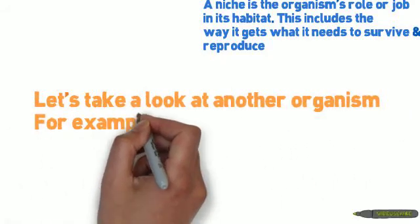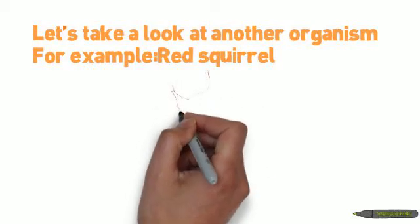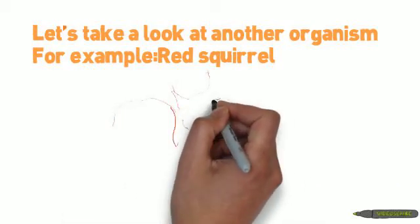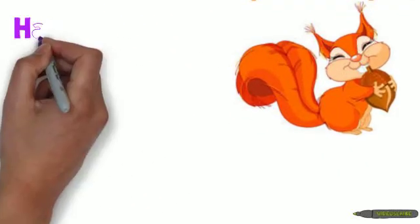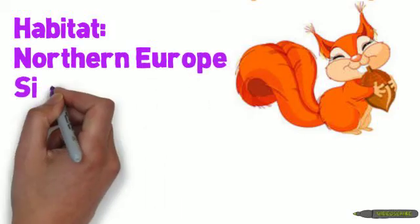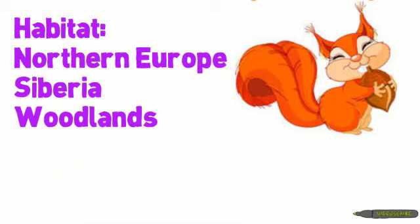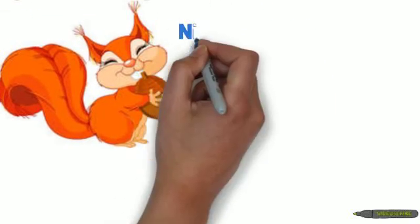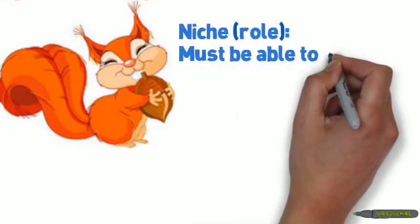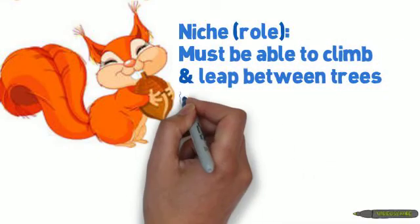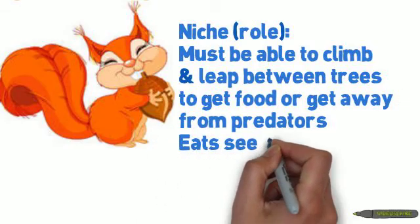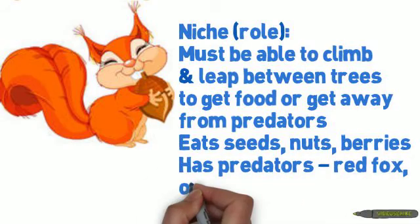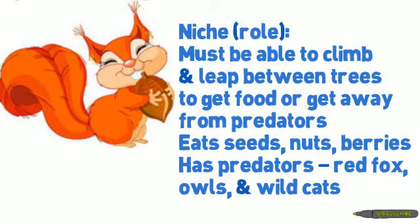Let's take a look at another organism to distinguish the difference between its habitat and its niche. Here is a red squirrel. The red squirrel lives mostly in Northern Europe and Siberia, in woodland areas or forests. Its niche, or how it lives within its habitat, includes being able to climb and leap between trees to get food or get away from its predators. Its niche also includes what it eats, like seeds, nuts, and berries, and its predators like foxes, owls, and wildcats.